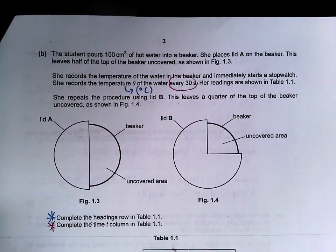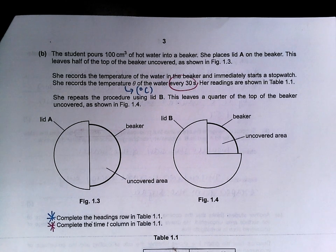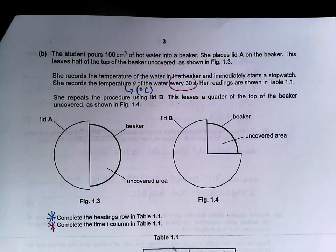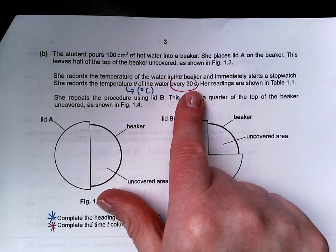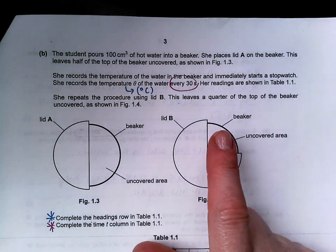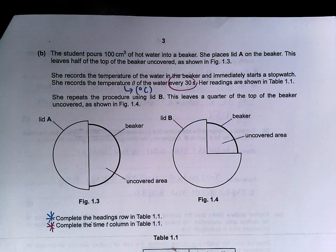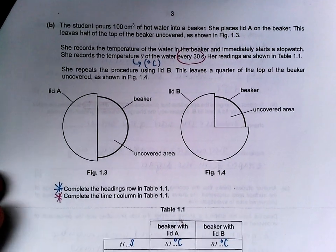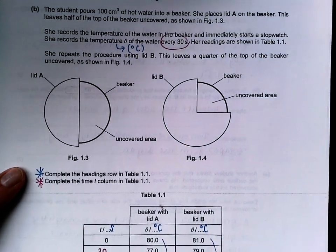In B, the student pours 100 centimeters cubed of hot water into a beaker. She places lid A on the beaker. This leaves half of the top of the beaker uncovered as shown in Figure 1.3. She records the temperature of the water and immediately starts a stopwatch. She records the temperature theta, which will be in degrees Celsius, every 30 seconds.